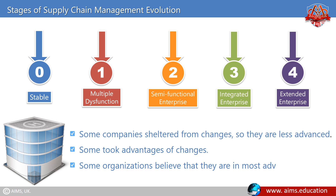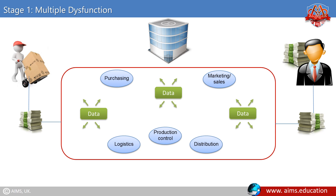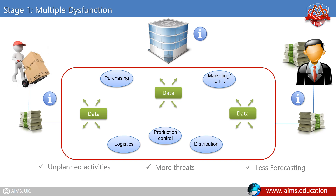In stage 1, multiple dysfunction, the nucleus organization lacks internal definition and goals. There are no external connections other than a few transactional links. The below exhibit illustrates the lack of coordinated flows of information or solid relationships among potential partners. Such organizations have unplanned activities, more threats, less forecasting, demand and supply issues, and poor payment flows.